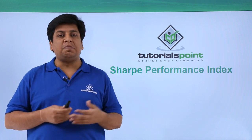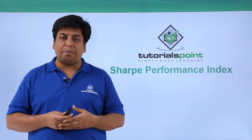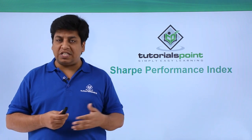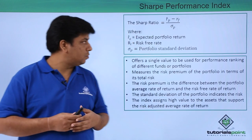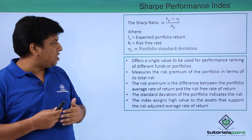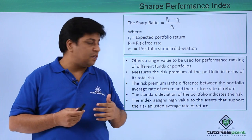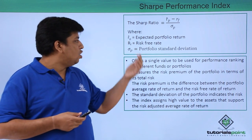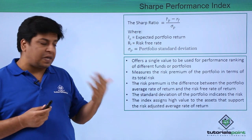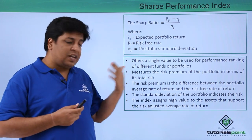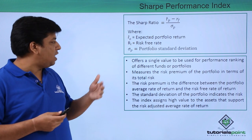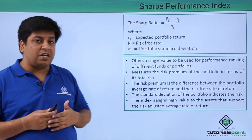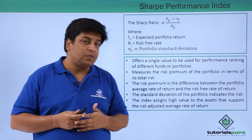Let's see what we mean by Sharpe Performance Index. To start with, we'll know what the Sharpe Ratio is. The Sharpe Ratio is: Rp minus Rf divided by the standard deviation of P. Here, Rp is your expected portfolio return, Rf is your risk-free return, and standard deviation of P is the portfolio standard deviation.